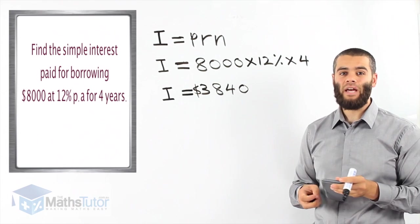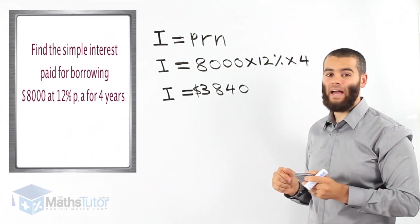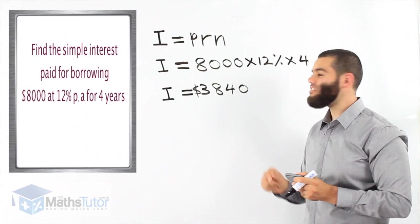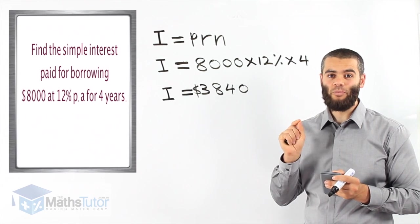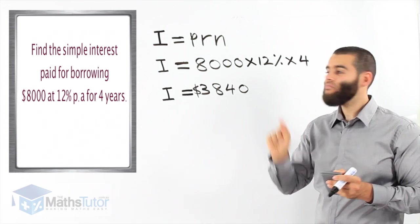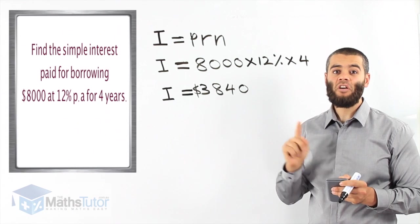So, this person has borrowed $8,000 over four years at 12% per annum. The interest they're going to pay on top of the $8,000 is $3,840. Very important.